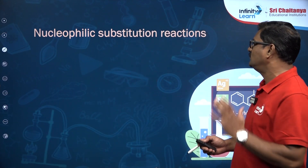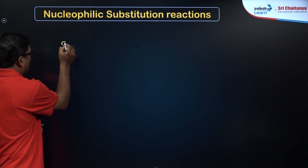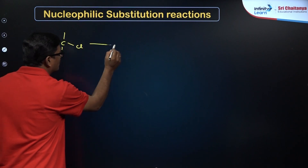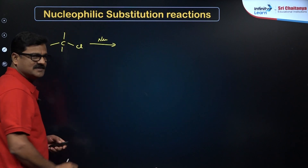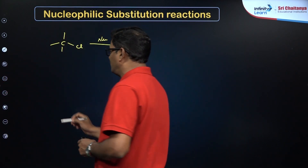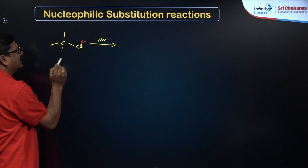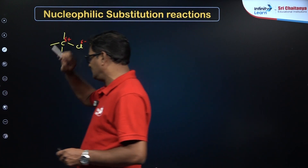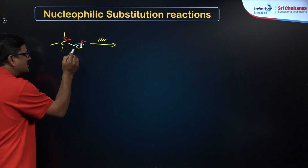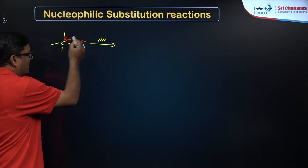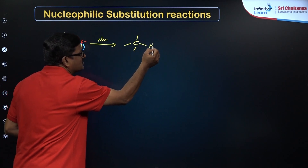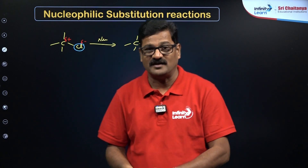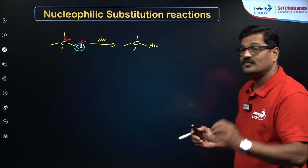So let's talk about what is a nucleophilic substitution reaction. Consider an alkyl halide having a halogen — let's say chlorine, which is partially negative — and the carbon is partially positive. A nucleophile is a species which attacks at a positively charged carbon. The nucleophile attacks at this positively charged carbon, and the halogen is the leaving group. A strong nucleophile substitutes a weak nucleophile — that is the overall picture of the nucleophilic substitution reaction.